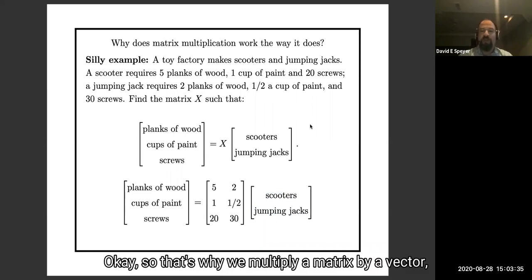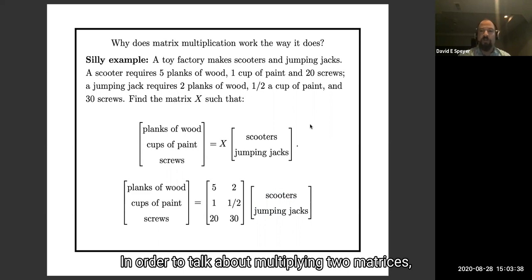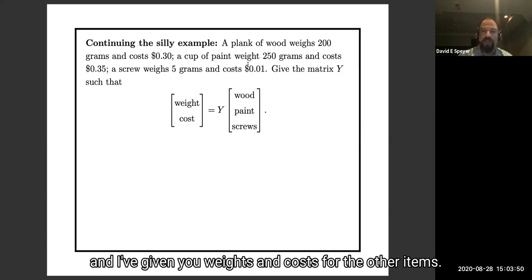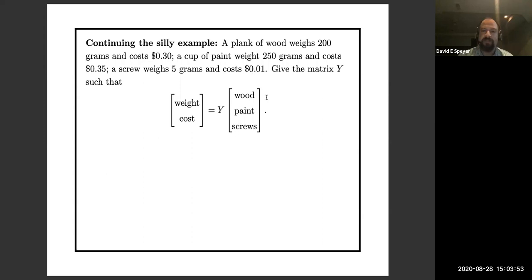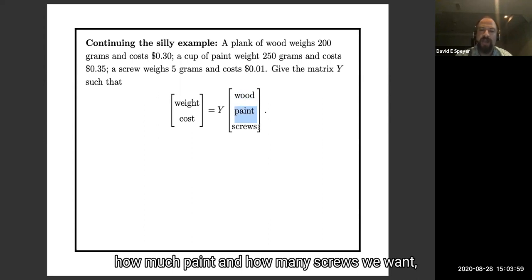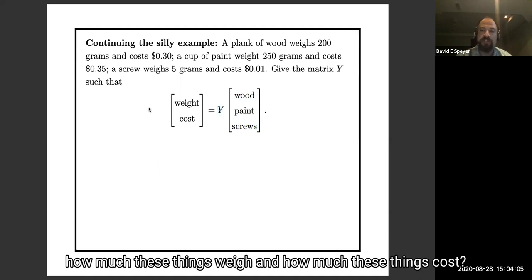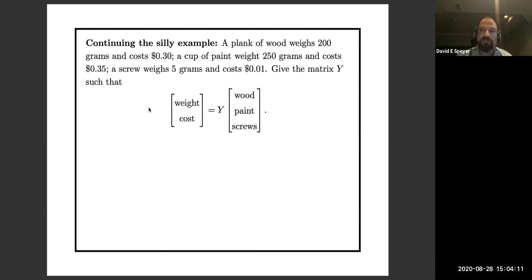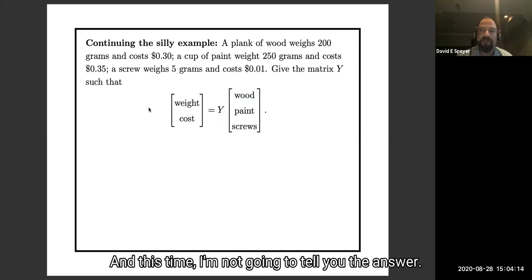Okay, so matrix multiplication, the way we multiply a matrix by a vector, we multiply a matrix by a vector in exactly the way that accounts for this sort of process, where we have one contribution from the scooters and another contribution for the jumping jacks, and we just add them up. Okay, so that's why we multiply a matrix by a vector the way we do. In order to talk about multiplying two matrices, I'm going to keep going with this silly example. So let's say a plank of wood weighs 200 grams and costs 30 cents, and I've given you weights and costs for the other items. So if we know how much wood, how much paint, and how many screws we want, what is the matrix that's going to tell us how much these things weigh and how much these things cost? Take a moment, write down your answer, you can pause. And this time I'm not going to tell you the answer, but if you are unsure of your answer, that'd be a great thing to bring up in office hours.